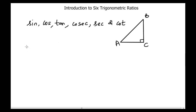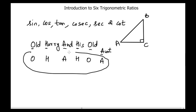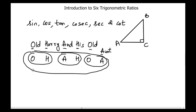In order to memorize the information about them properly, I will go through one sentence to make things easier. The sentence is: 'Old Harry and his old aunt.' If we take the first letter of each word, we get: O, H, A, H, O, A. We can then arrange them into pairs.